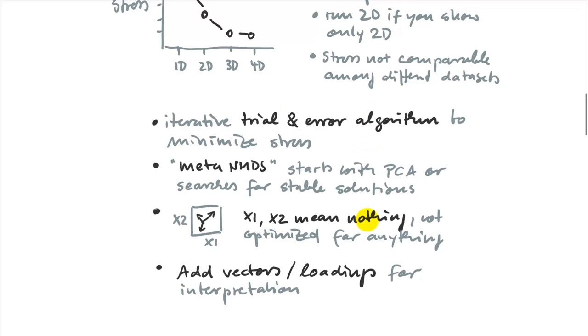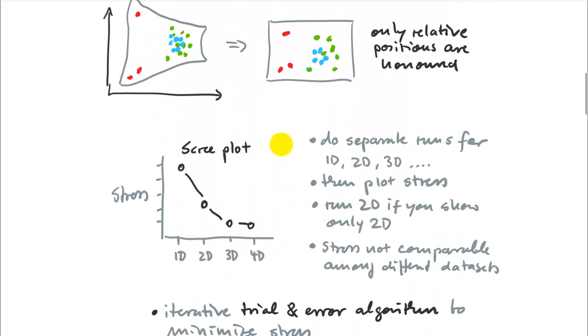Generally, all these distance-based techniques tend to be trial and error-based algorithms. You basically do your rubber sheet transformations and you tuck a little bit this way and you tuck a little bit that way and see if it minimizes the stress. If you have large data sets, this can take quite a while for the computer to figure that out. Because it's a trial and error algorithm, you also get different results every time you run this.